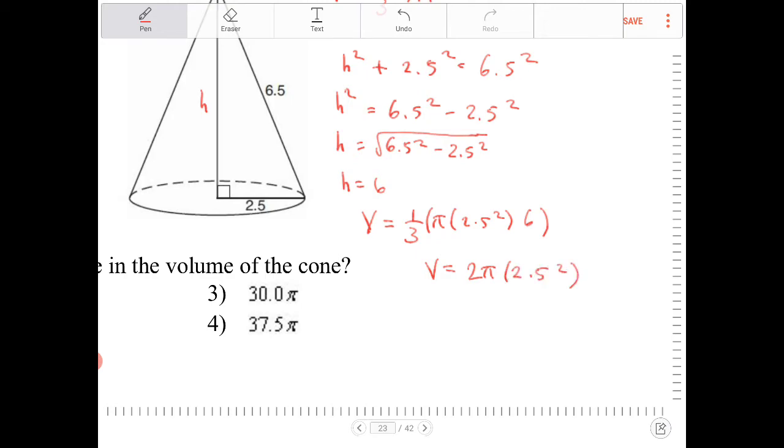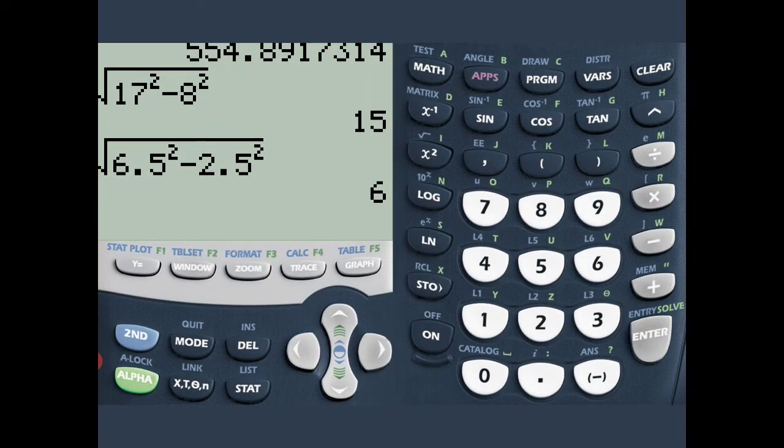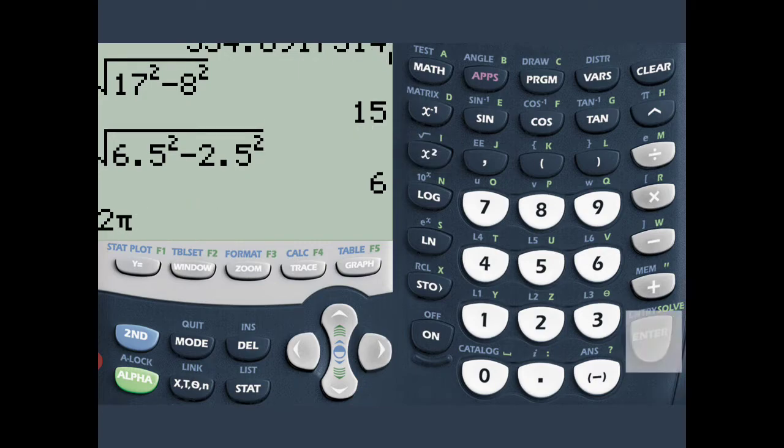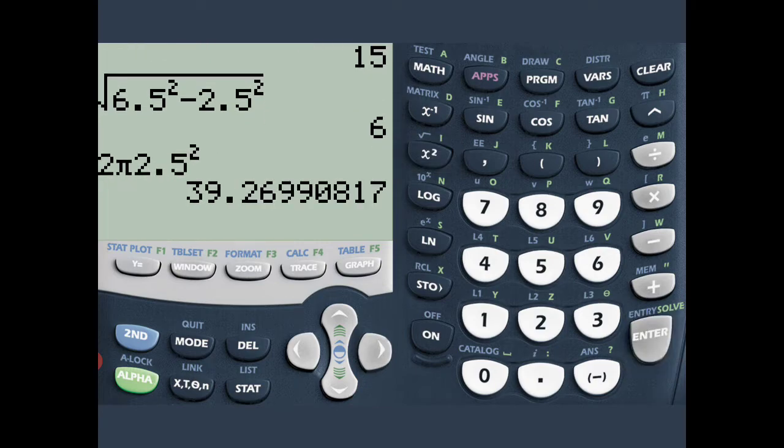So let's punch that into the calculator. 2 pi 2.5 squared. And that will give me 39.27.